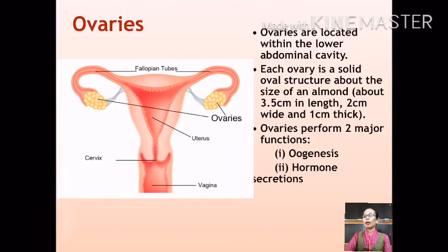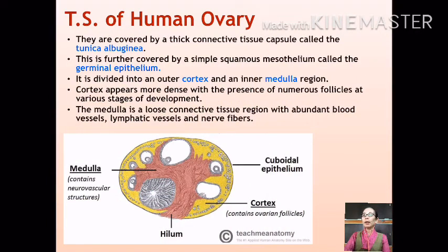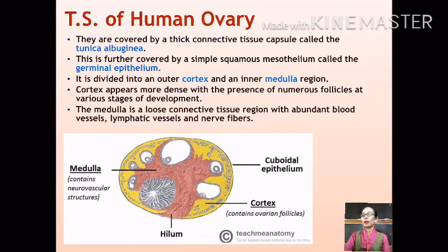Ovaries are covered by germinal epithelium on the outside. Under this germinal epithelium lies a thick connective tissue capsule called the tunica albuginea. The ovary also consists of two regions: the cortex, which is the outer region, and the medulla, which forms the inner region. The cortex is more dense with various follicles that exist in different stages of development, whereas the medulla is a loose connective tissue region with lots of blood vessels, lymph vessels, and nerve fibers.